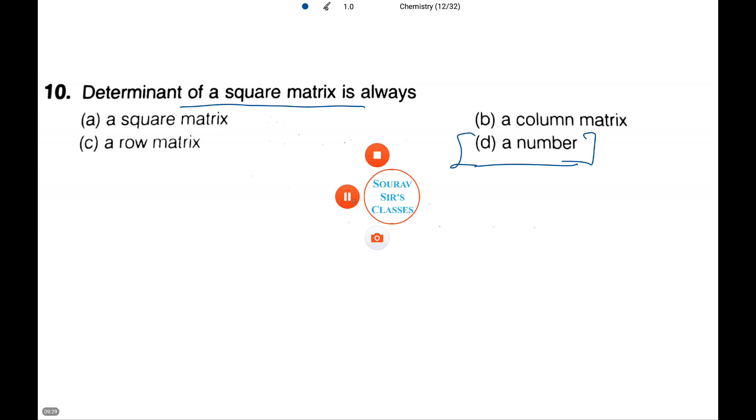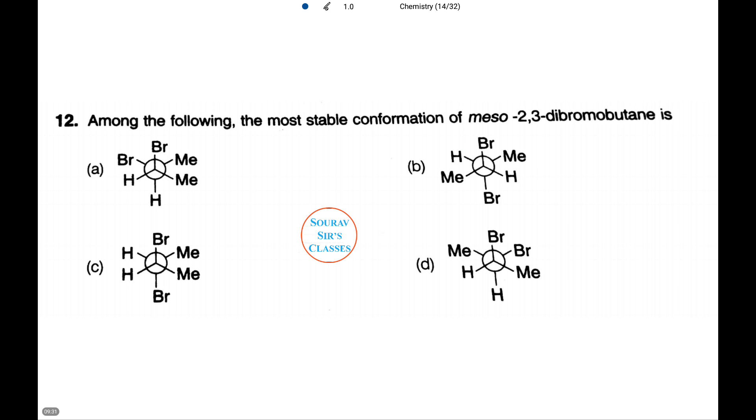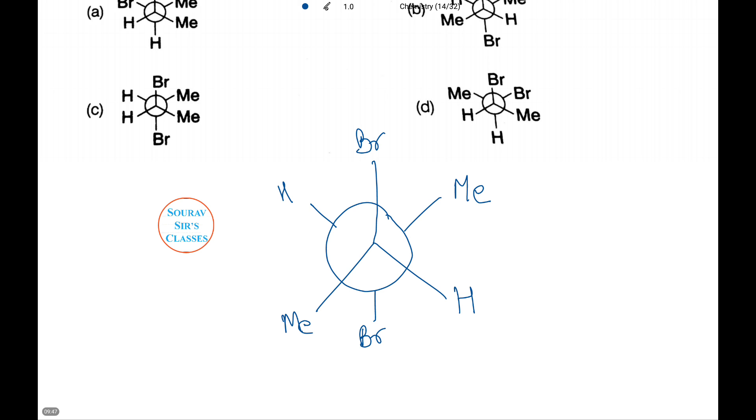Thus we get number D as an option. Now let's work our brains a bit again. We need to figure out the most stable conformation of meso-2,3-dibromobutane. We're given the following four structures. Let's see which is the correct one. This is the most stable conformation of meso-2,3-dibromobutane.